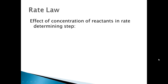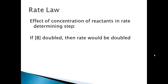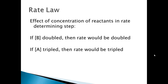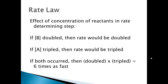Now let's look at what happens if we change those concentrations. If we double the concentration of B, the rate also doubles. If we triple the concentration of A, the rate also triples. If we do both — double B and triple A — then 2 × 3 means our rate would be 6 times as fast. This is part of why rate law equations are useful: you can predict how the rate changes when you change reactant concentrations.